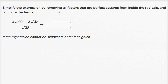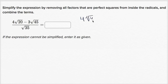We're asked to simplify the expression by removing all factors that are perfect squares from inside the radicals and combining the terms. Let's see how we can rewrite these radicals. Four times the square root of 20 is the same thing as four times the square root of four times the square root of five, because 20 is the same thing as four times five.